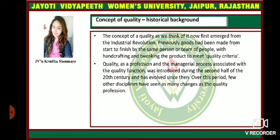What is the historical background of the concept of quality? The concept of quality, as we think of it now, first emerged in the industrial revolution. Previously, goods had been made from start to finish by the same person or team of people, with hand crafting and tweaking the product to meet quality criteria. Quality is a profession, and the managerial process associated with the quality function was introduced during the second half of the 20th century and has evolved since then. Over this period, few other disciplines have seen as many major changes as the quality profession.